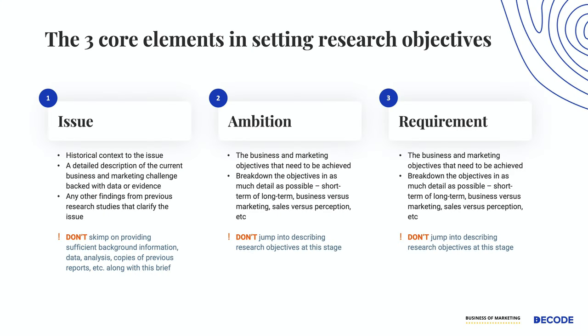The three core elements that are essential for setting the objectives of market research are: issue, ambition, and requirements. You can use other words, but what is important is to understand what I'm referring to with the help of these three words. Let's try and understand what exactly is writing the issue correctly, or arriving at the problem correctly.